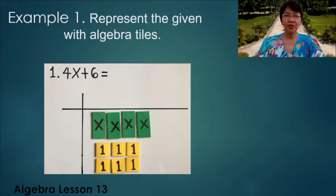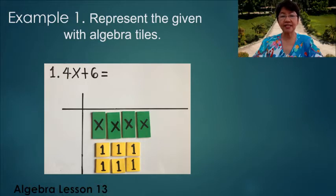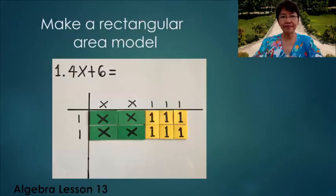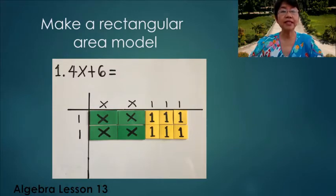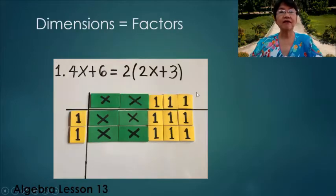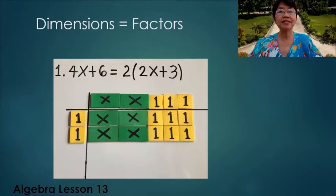Example 1: Represent the given with algebra tiles, 4x + 6. So we have 4x and 6 unit tiles. Then we make a rectangular area model. We see that the vertical component of the rectangle is 1 + 1, and the horizontal component is 2x + 3. So the factors of our polynomial is 2(2x + 3).